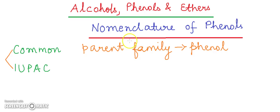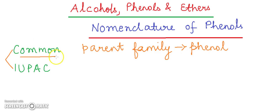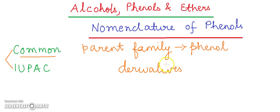Welcome to chemistry class. Today we are going to learn about the nomenclature of phenols, under the topic alcohols, phenols, and ethers. We know that we have two types of nomenclature systems: one is the common and another one is the IUPAC. In both systems, the parent family for the nomenclature of phenol is phenol. According to the common system, the parent member is phenol, and the other members are named as derivatives of phenol.